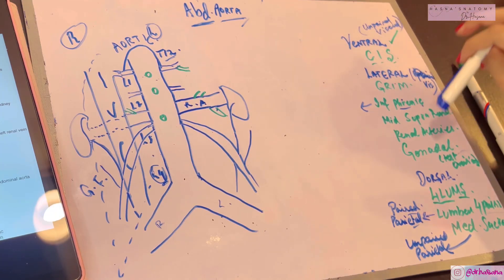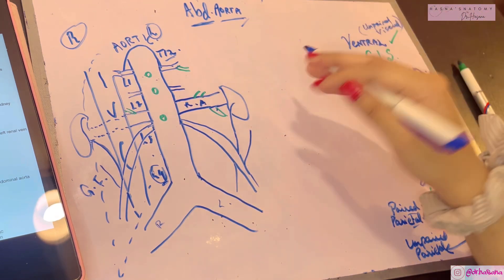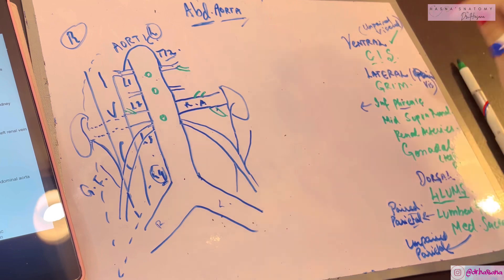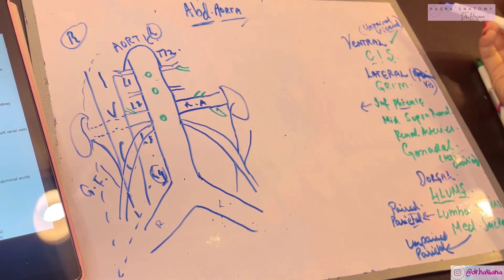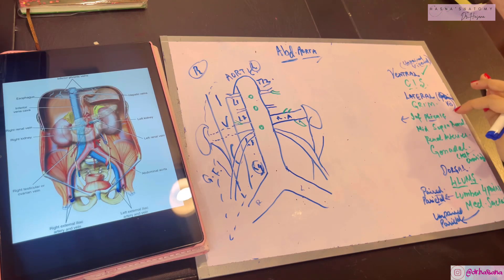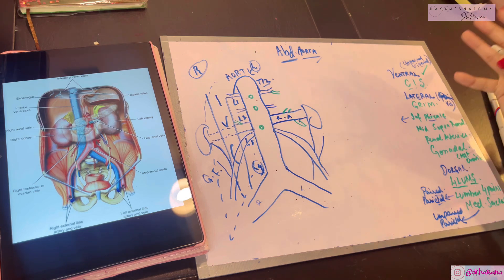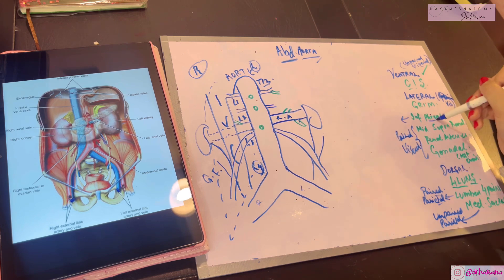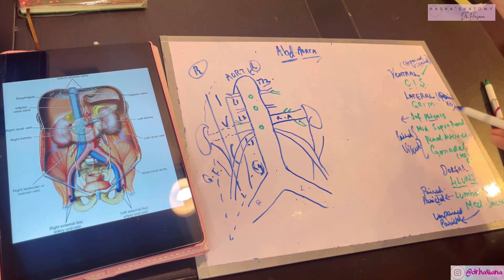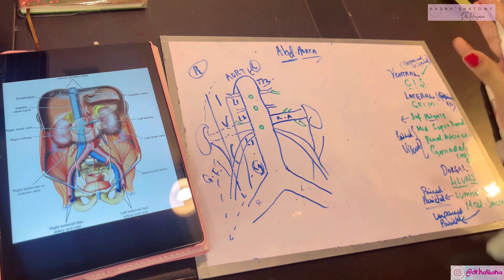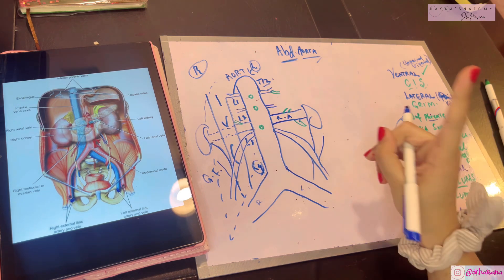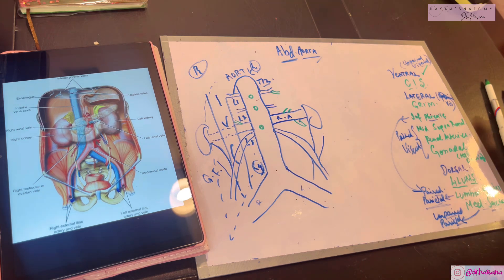Overall, branches of the aorta are described as either paired or unpaired, and either visceral or parietal. The ventral branches are unpaired visceral branches supplying the gut. The lateral branches - inferior phrenic, middle suprarenal, renal, and gonadal - are paired visceral arteries. The inferior phrenic and lumbar arteries are paired parietal branches supplying the abdominal wall. The median sacral artery is the unpaired parietal branch.